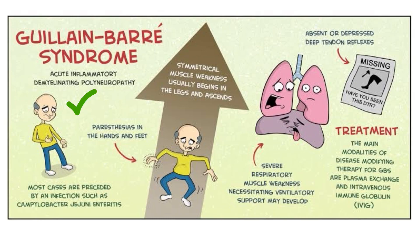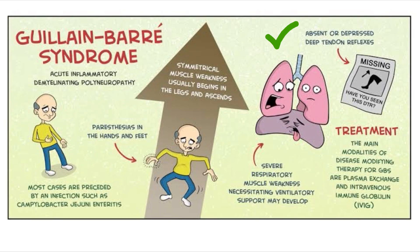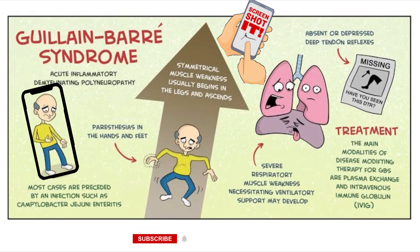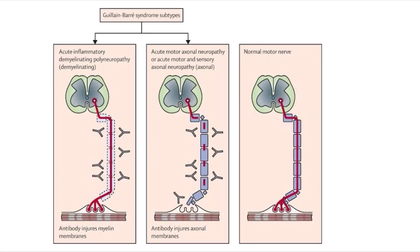To summarize GBS: it is an acute inflammatory demyelinating polyneuropathy. Symptoms begin with paraesthesias in the hands and feet, followed by symmetrical muscle weakness usually beginning in the legs and ascending upward. Most cases are preceded by an infection such as Campylobacter jejuni. There are absent or depressed deep tendon reflexes, and in 30% of cases severe respiratory muscle weakness may require ventilatory support. Treatment options are plasma exchange and IVIg. This summary picture is worth a screenshot for revision.